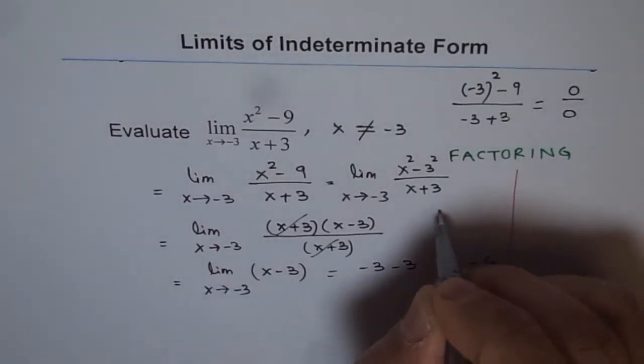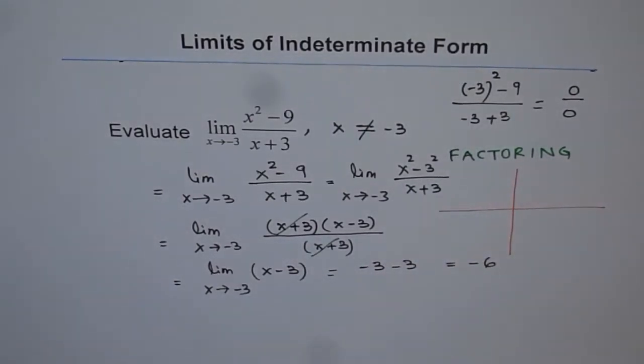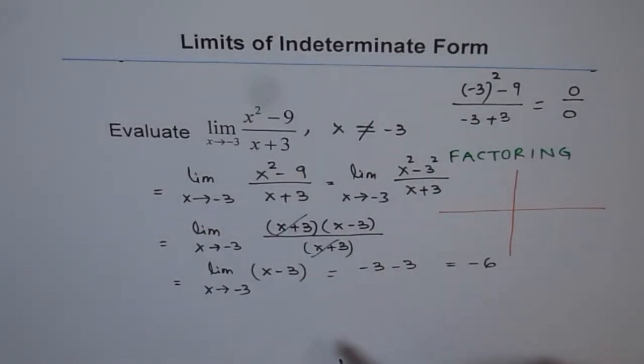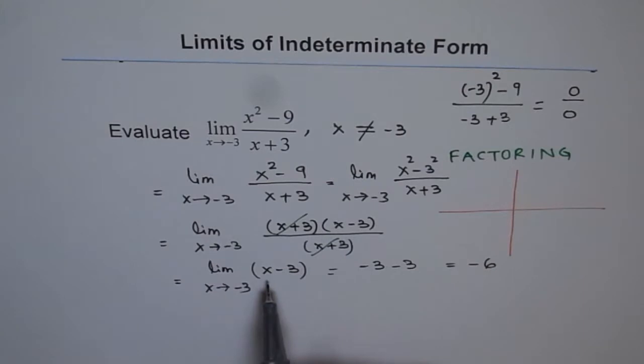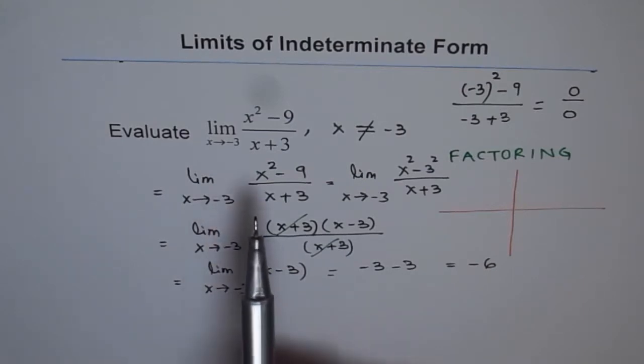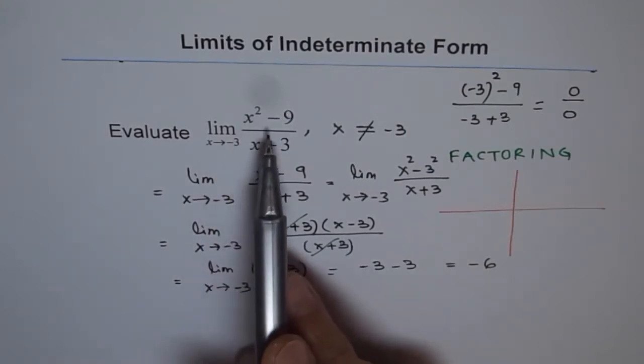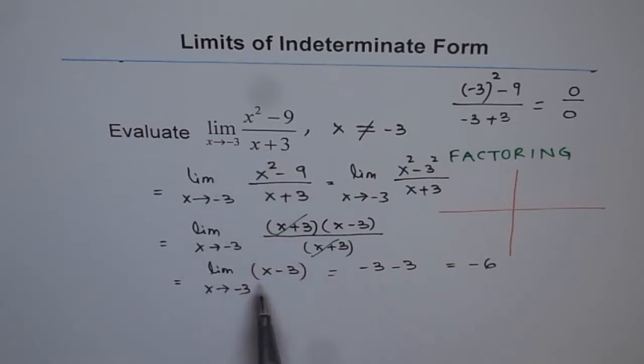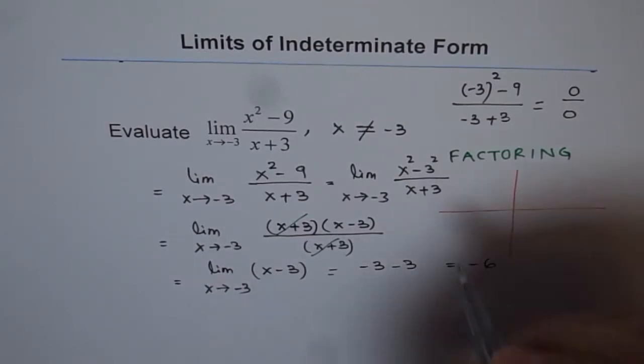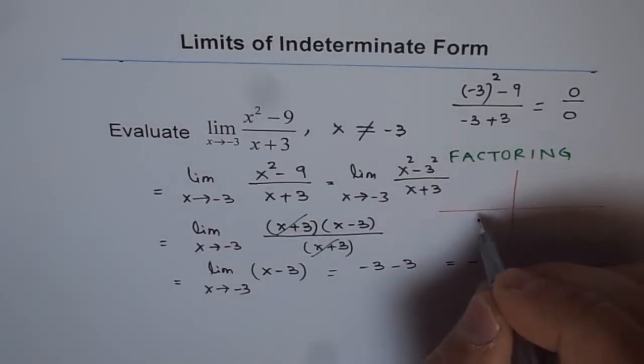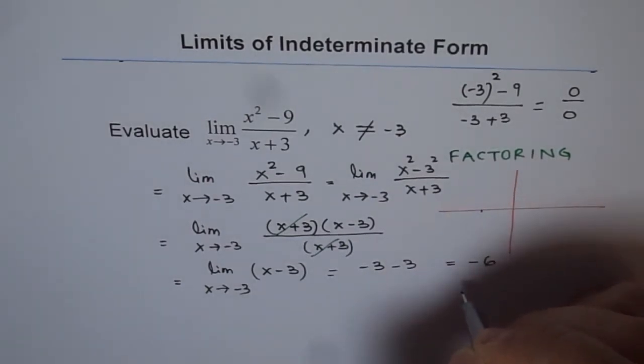Let me just sketch a graph for you here to show how this function really looks like. As we have simplified here, we got this simplified form that x squared minus 9 divided by x plus 3 is equal to x minus 3, where x is not equal to minus 3. So at minus 3, we have a hole.